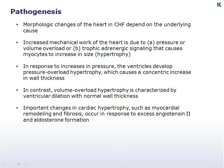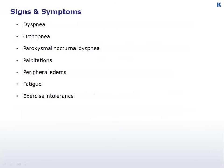Some of the important changes in cardiac hypertrophy, such as myocardial remodeling and fibrosis, occur in response to excess angiotensin II and aldosterone formation. Therapeutic inhibition of these processes provides important health benefits to patients with CHF. As a consequence of these pathologic changes, patients may develop signs and symptoms of congestion and hypoperfusion.